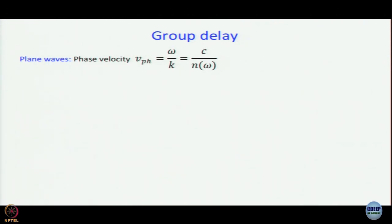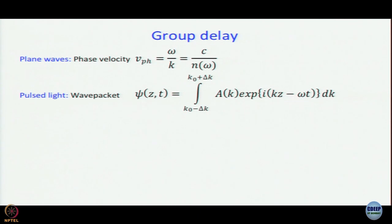We have discussed earlier that plane waves are characterized by their phase velocity: v_ph = ω/k = c divided by the refractive index at that value of ω. How do we describe pulse light? Pulse light is a mixture of many plane waves, so the amplitude wave function of pulse light can be written as an integral. We write an integration because it is easier to arrive at the next step, and you can do it numerically as well.